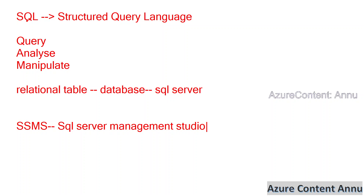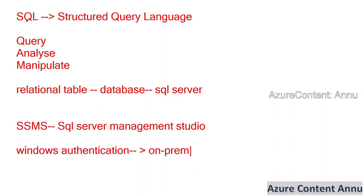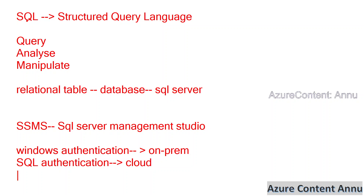There are multiple ways to create a connection between SSMS and the SQL server. The first way is Windows authentication — if your SQL server is present on-premise or locally, then we use Windows authentication. If it is present in the cloud, for example Azure SQL database, then we cannot use Windows authentication. We need to go for either SQL authentication, where you provide a user ID and password, or Azure Active Directory authentication.